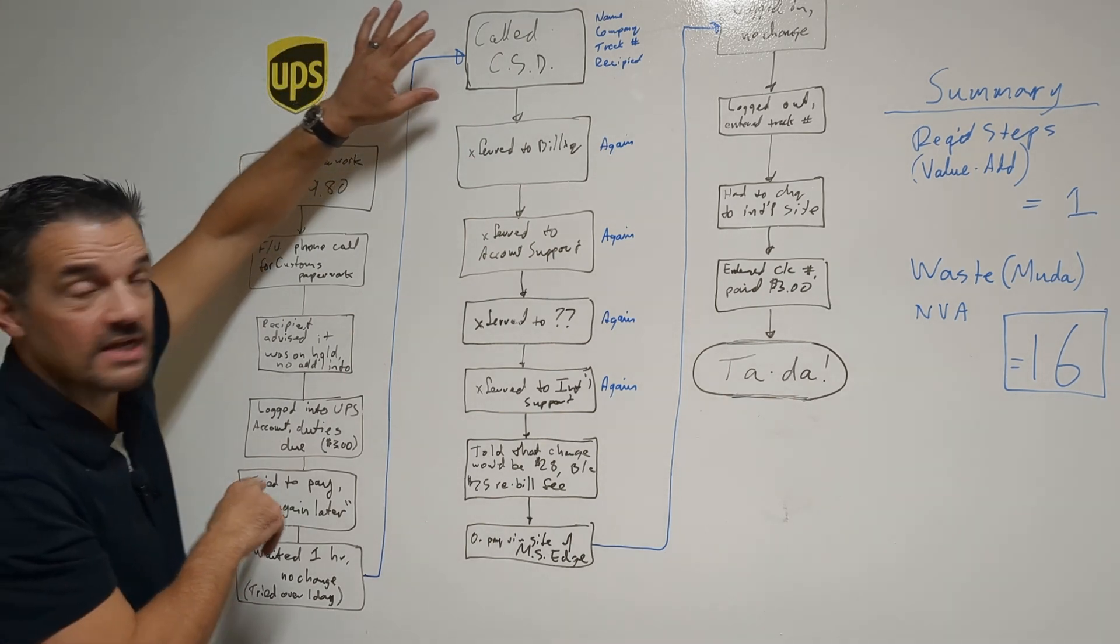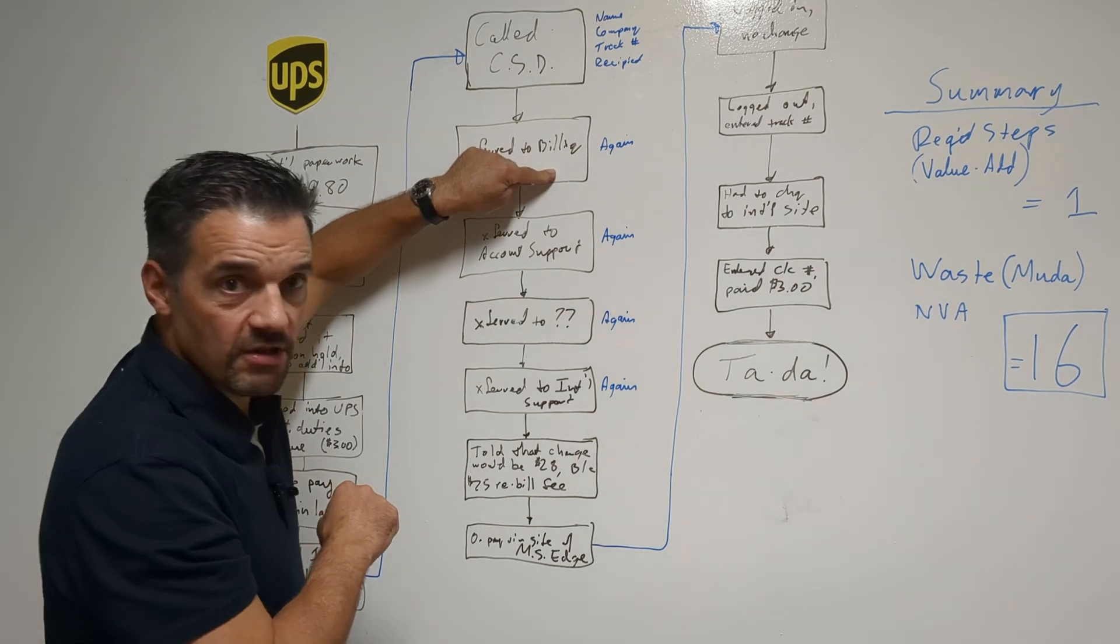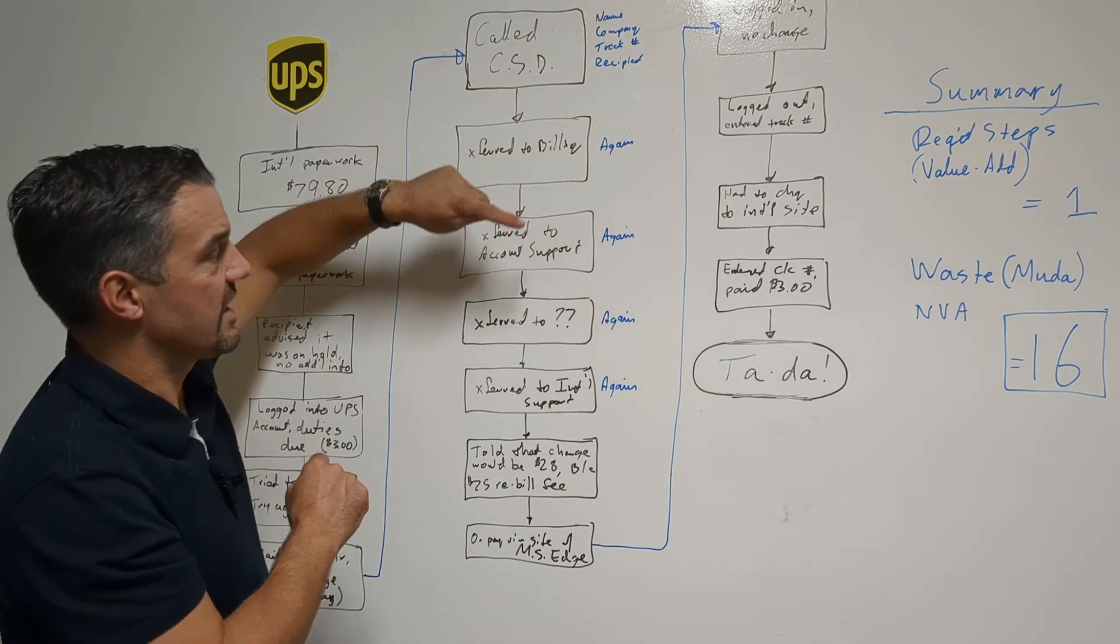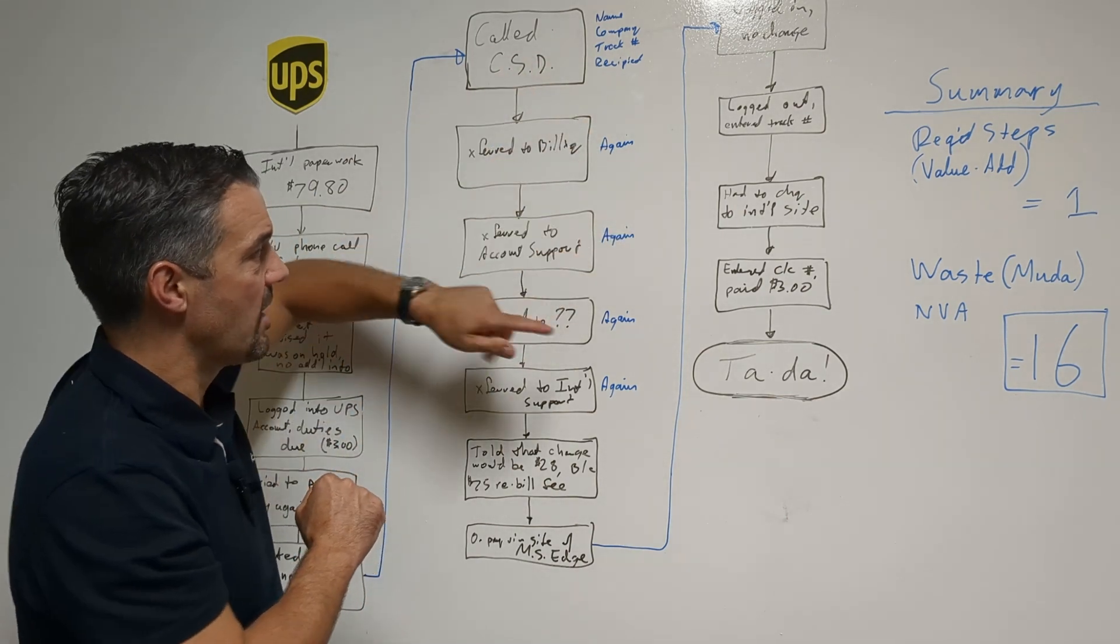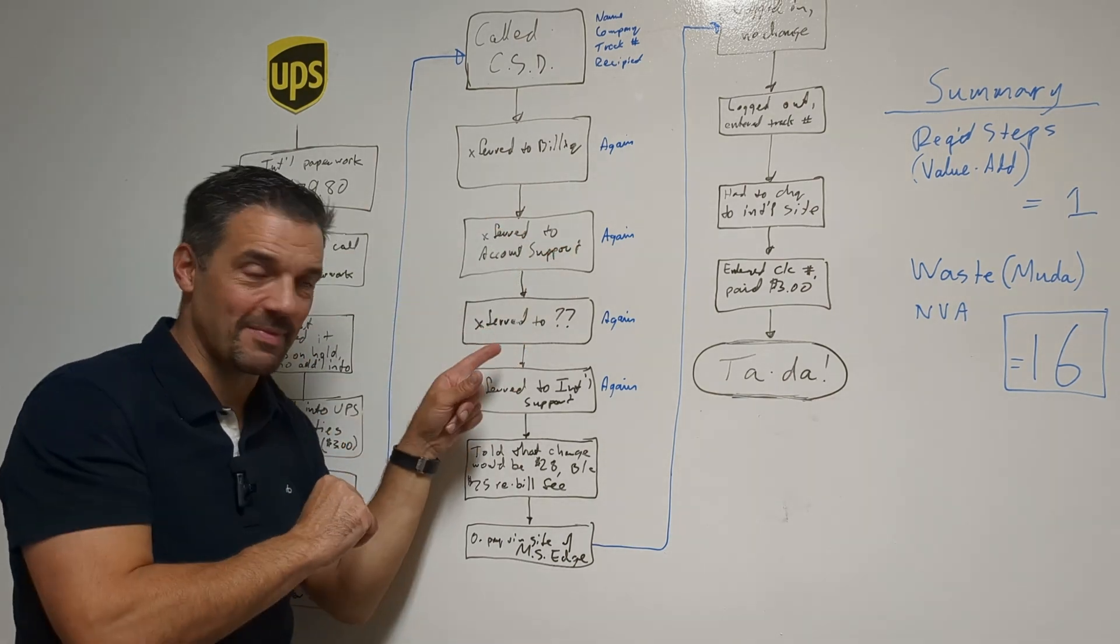Now that department has everything they need about what our issue is, which is all the way back here, which is to pay a three-dollar customs fee. They transfer. The next department - 'oh, what are you calling for?' Same information again, describe the problem. Transferred again to account support. Account support - same information again, describe the problem. 'Oh, we need to transfer you.' Don't remember who we were even transferred to.